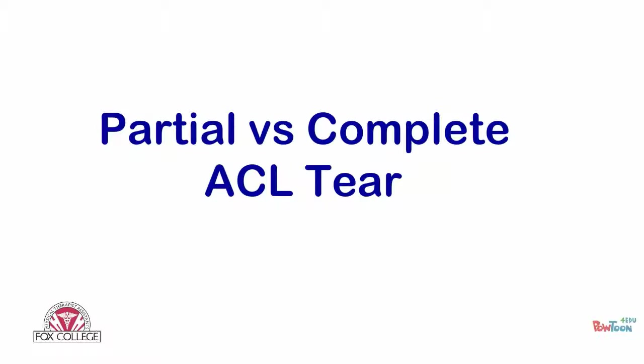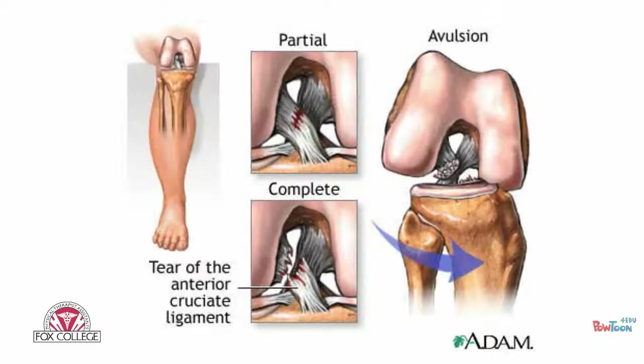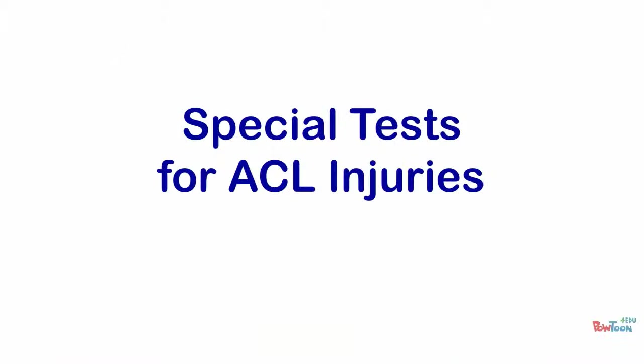There are two types of tears associated with an ACL injury: partial or complete. In the partial tear, some fibers are torn. In a complete tear, the fibers are completely torn mid-ligament. And if you look at the side picture on the right, that's an avulsion where the ligament has actually detached from the bone.